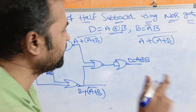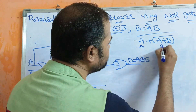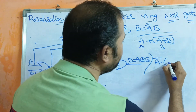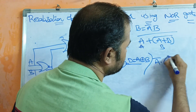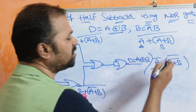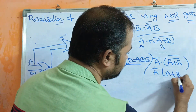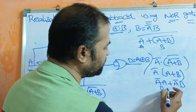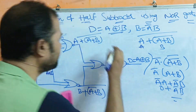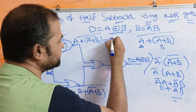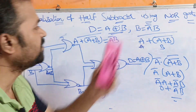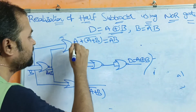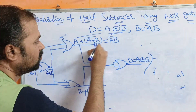So we get A-bar · (A + B-bar). Using distribution: A-bar · A plus A-bar · B-bar. Since A-bar · A = 0, this simplifies to A-bar · B. So A-bar · B is nothing but the borrow-out (B_out). This means we are directly getting the borrow-out from the second NOR gate's output.